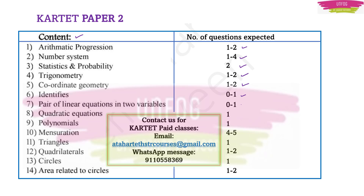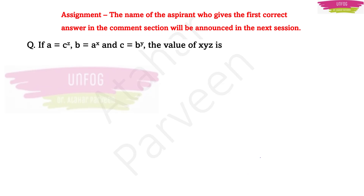In pair of linear equations in 2 variables, they may ask 1 question or skip it. In quadratic equations you may get 1 question, polynomials 1 question, mensuration 4 to 5 questions, triangles 1 question, quadrilaterals 1 to 2 questions, circles 1 question, and area related to circles 1 to 2 questions. On this note, let us start — but first let me give you the answer to the problem we gave as assessment in the previous session.